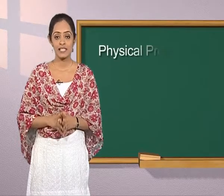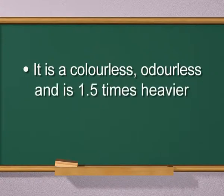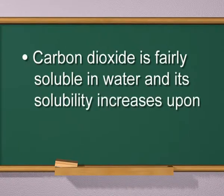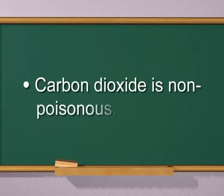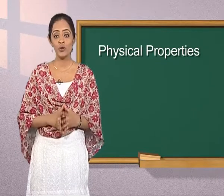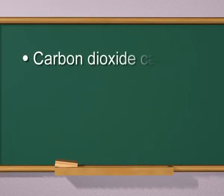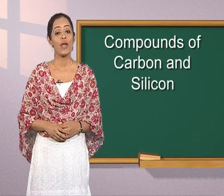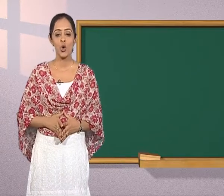Carbon dioxide is a colorless, odorless gas and is 1.5 times heavier than air. It is fairly soluble in water and its solubility increases upon increasing the pressure. Unlike carbon monoxide, carbon dioxide is non-poisonous. Carbon dioxide can be liquefied at room temperature under 50-60 atm pressure. When the temperature of liquid carbon dioxide is lowered to evaporate suddenly, it solidifies to form a snow-like mass called dry ice.